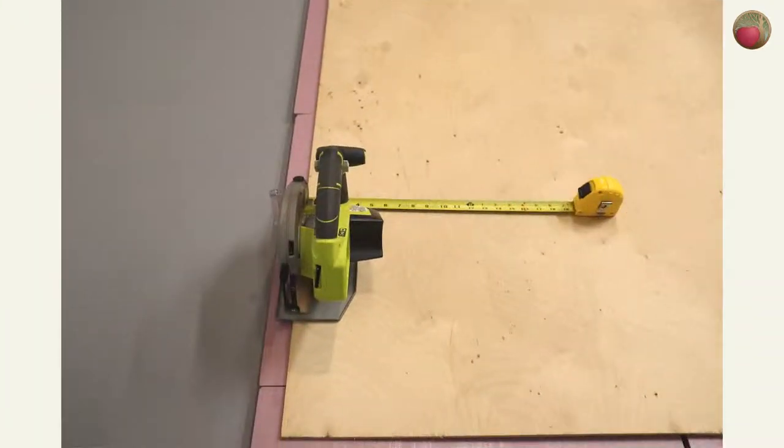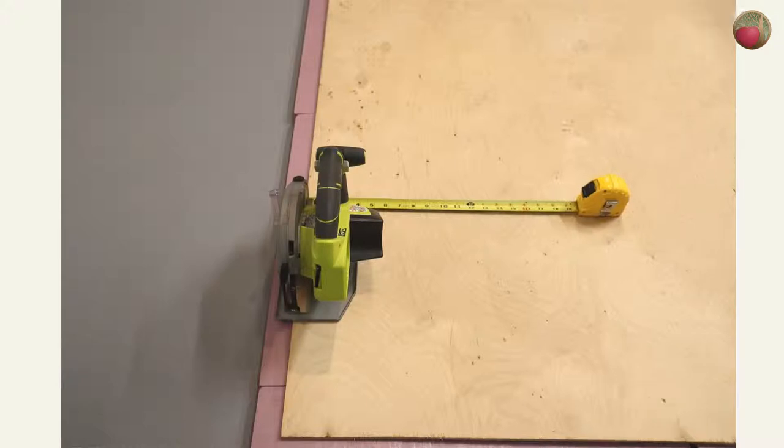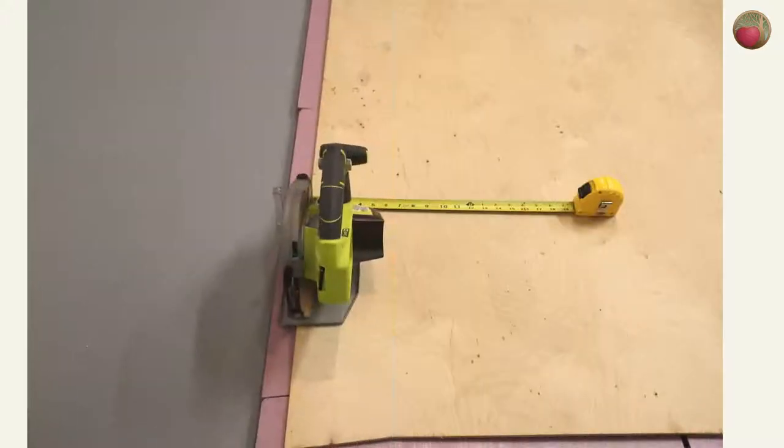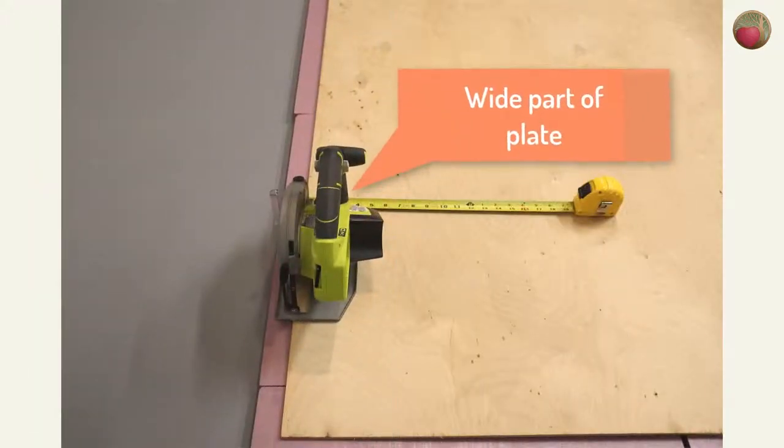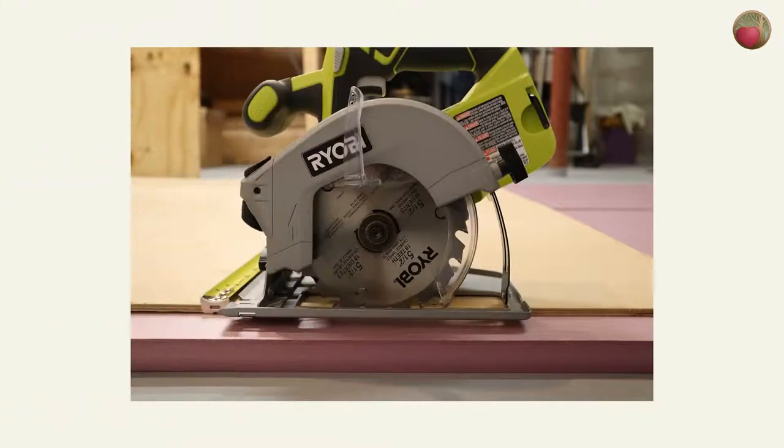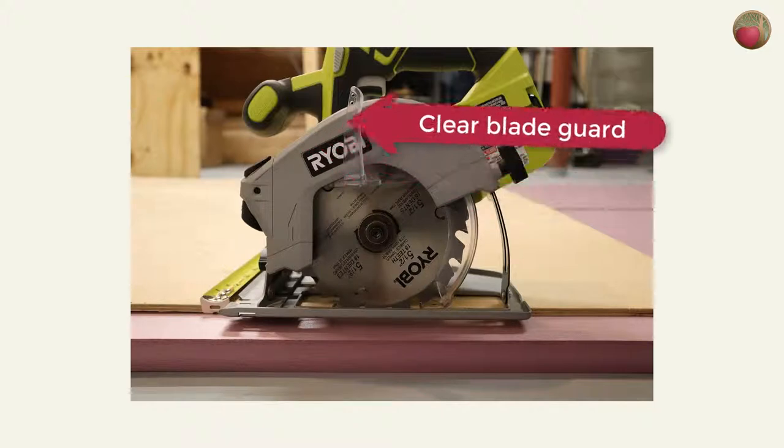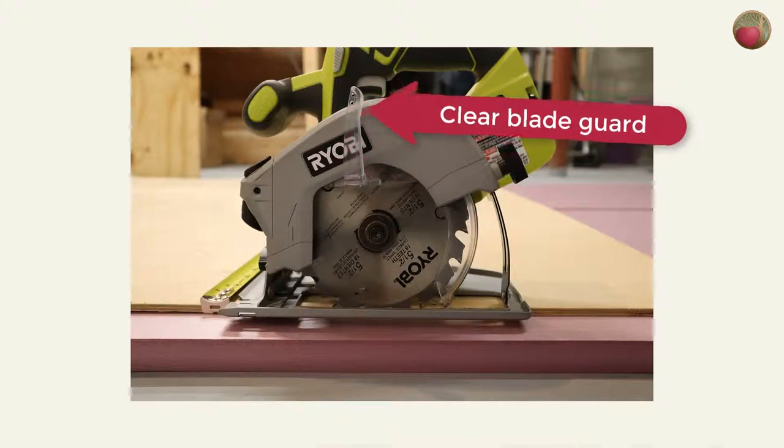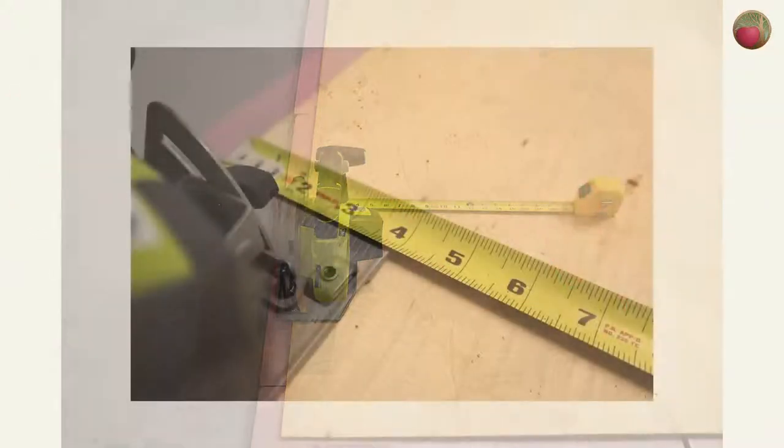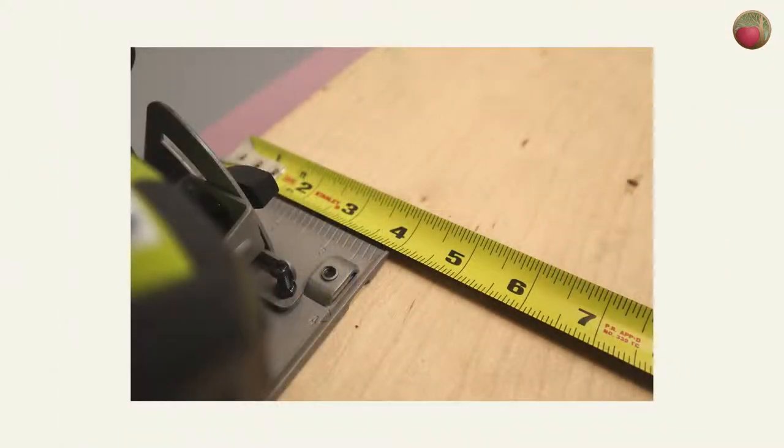Next, you'll want to measure your saw shoe or base plate. Now, be sure your saw is unplugged or the battery is out before you do this part. Set the widest part of the plate on some plywood where the edge is free, meaning the blade tips are below the wood as if you're cutting it. Then lift the blade guard so that you can place the inside of the blade snugly against the edge of the plywood while holding the saw to ensure it is dead flat on the plywood.